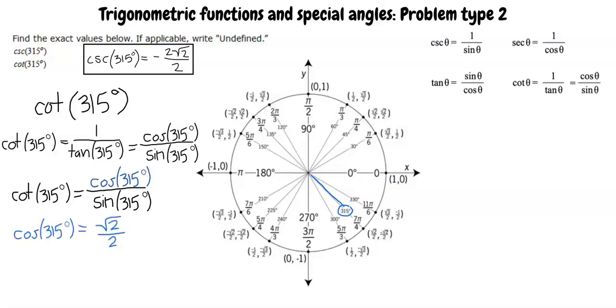What is sine of 315 degrees? Is it negative square root 2 over 2? Exactly. Great work.